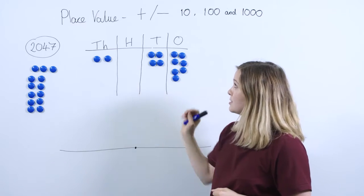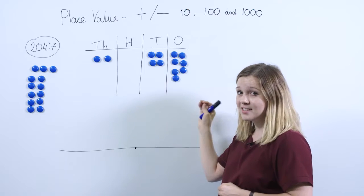Here I've represented our number 2047 on our place value chart. I've got 2 thousands, no hundreds, four tens, and seven ones.